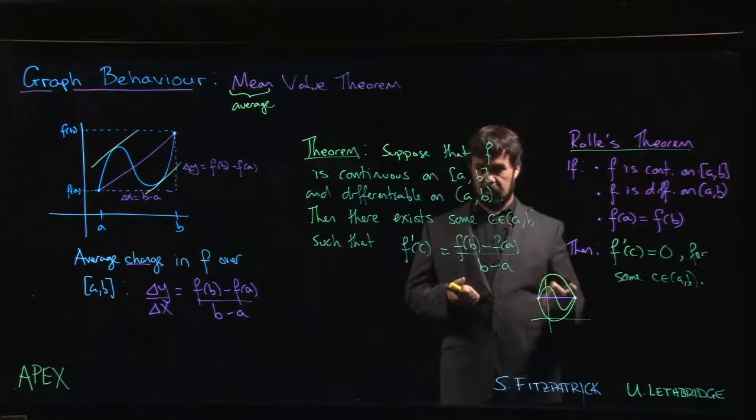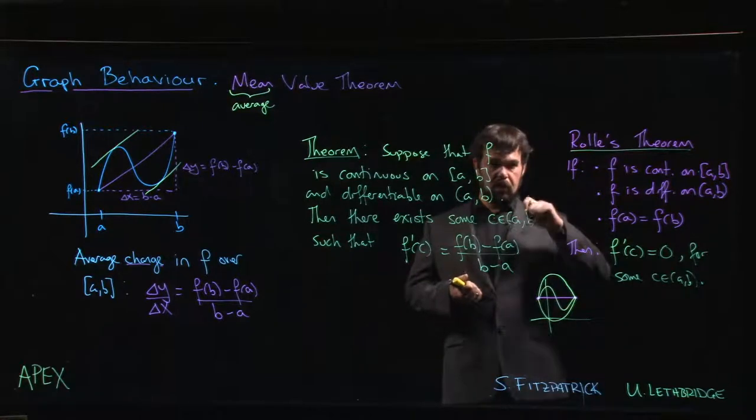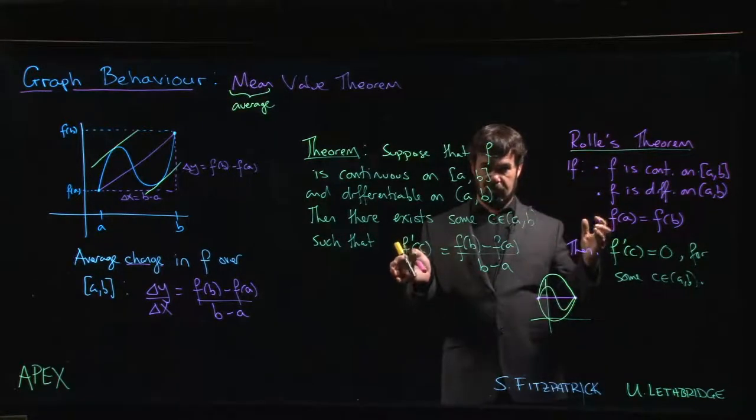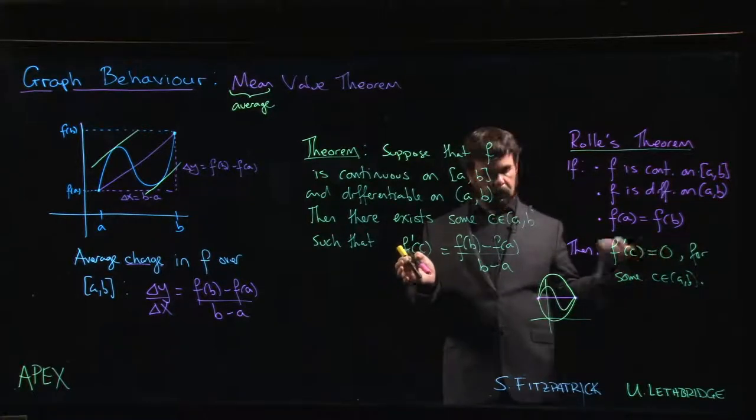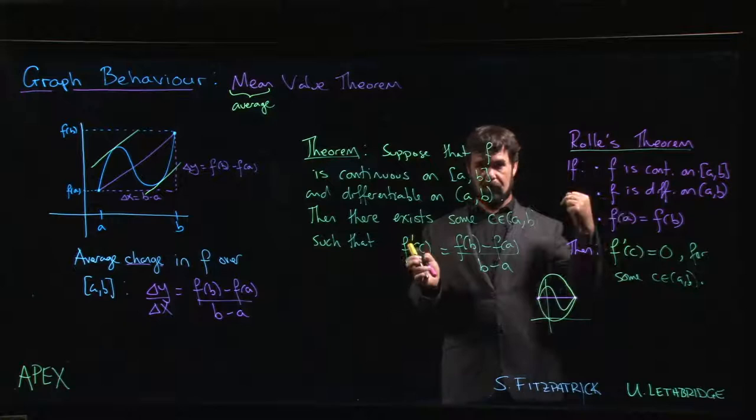We know the other one has to occur at a critical point. We're assuming the function is differentiable everywhere, so there are no critical points where the derivative is undefined. Therefore, that critical point has to be a place where the derivative is zero.